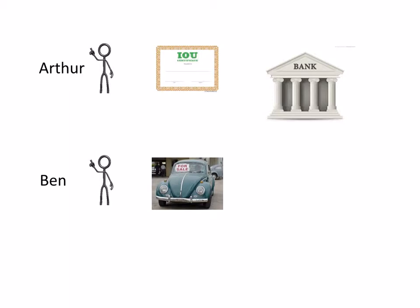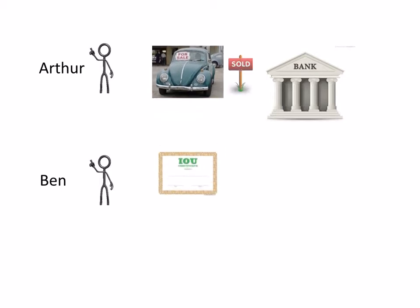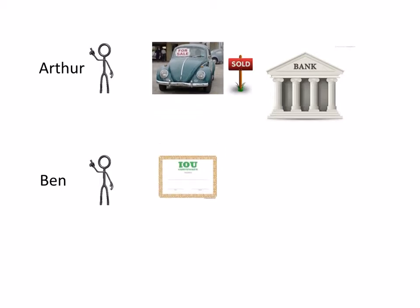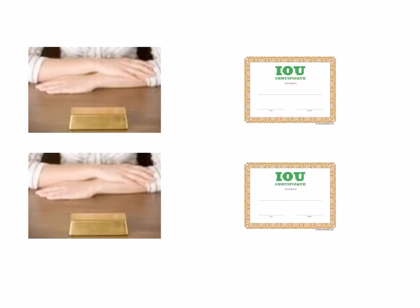Now this is a very long-winded process for Arthur to end up with the car and Ben to end up with the IOU note. Would it not have been much easier for Arthur to have exchanged the IOU note with Ben for the car, and for the gold to have remained at the bank? And here we see the birth of paper currency — in effect a credit note, or IOU, backed by gold. For every gold bar that the bank holds, it can issue a credit note, which can then be traded in the economy as legal tender.